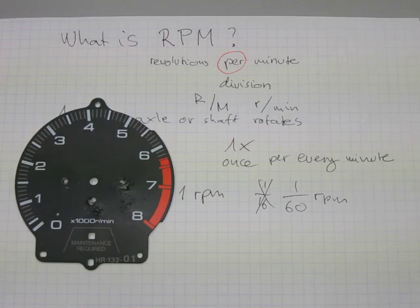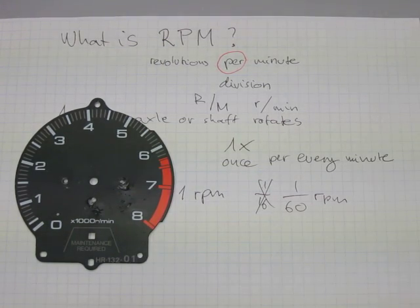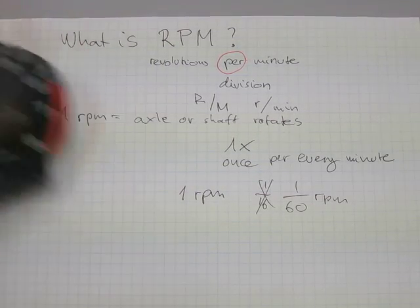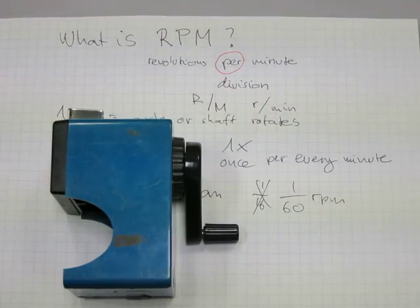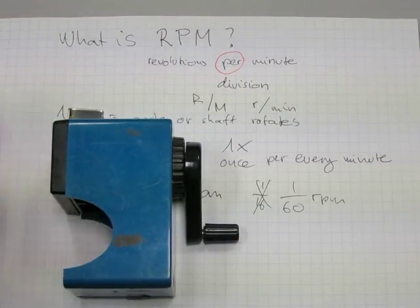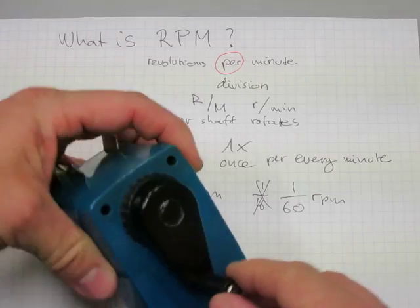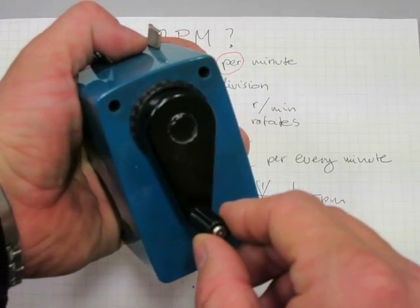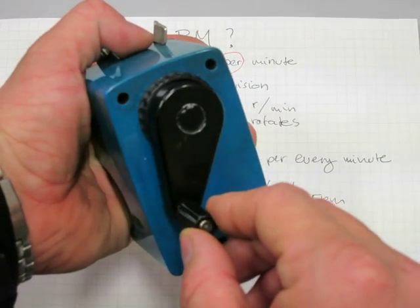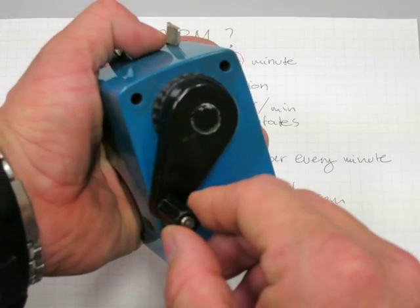Now when it comes to your engine, what is 1,000 RPM, or what does a redline of 6,500 RPM mean? Let's upscale it. We have here a pencil sharpener with a crank on it.